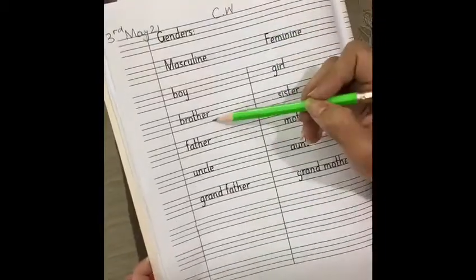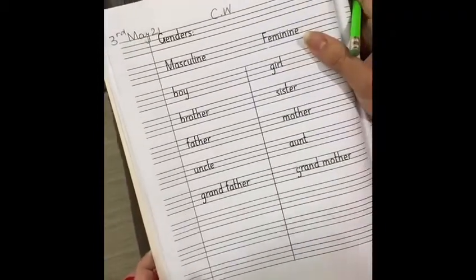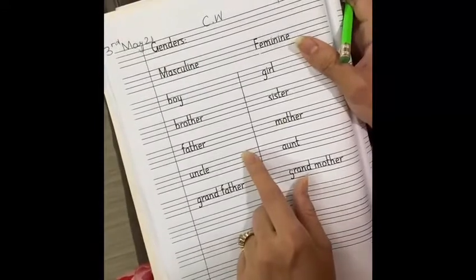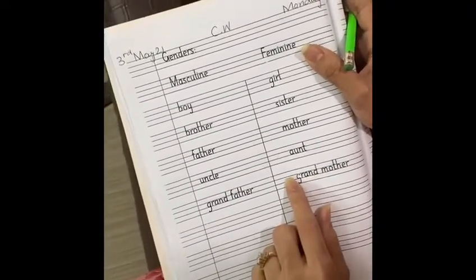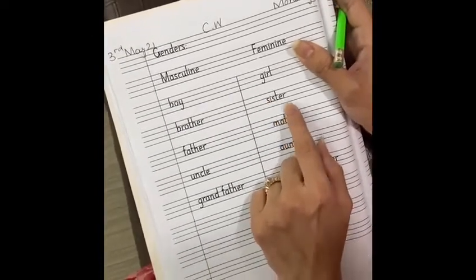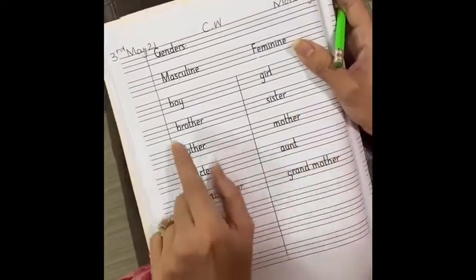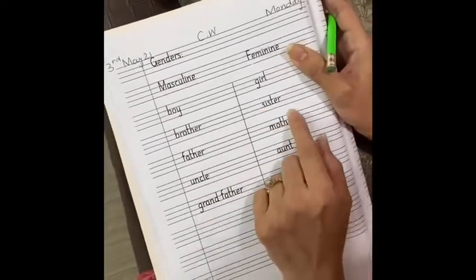See, the next example of masculine. Brother. What is the feminine of brother? As I told you, feminine is a female character. We use female, she, sister. So brother is masculine, male character. And sister, female, feminine.